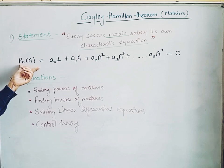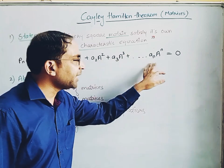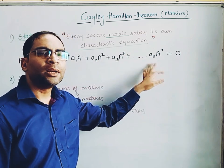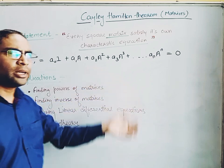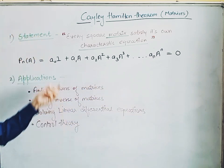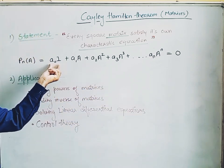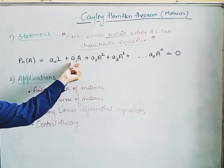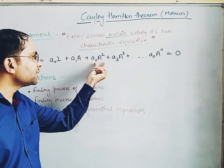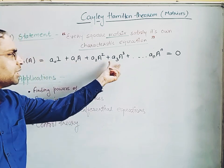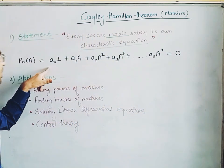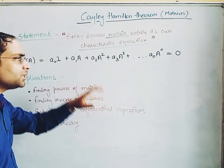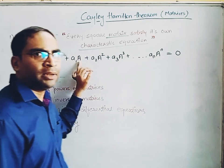If we write the statement in mathematical expression, this is the characteristic equation of a matrix. We have already seen how to calculate the characteristic equation of a matrix, and we will do it here today as well. The expression includes a zero constant, the identity matrix, A1, the matrix A, A squared, and so on, all set equal to zero. Essentially, this is the characteristic equation where lambda has been replaced by the matrix A itself.